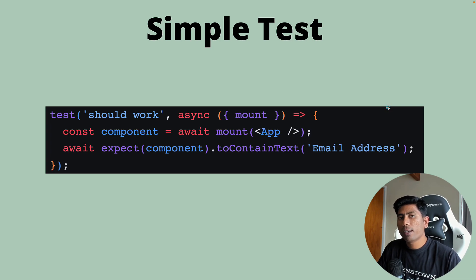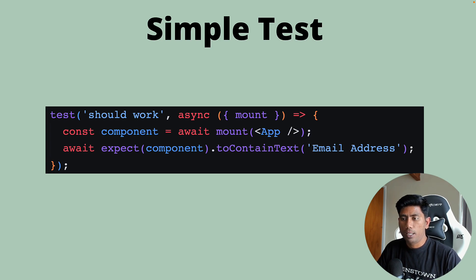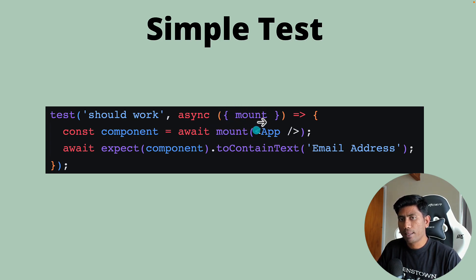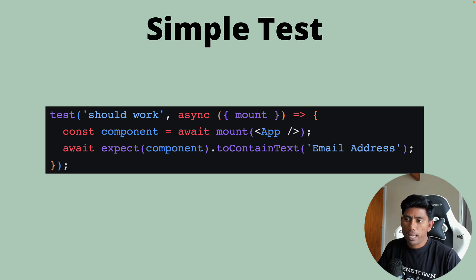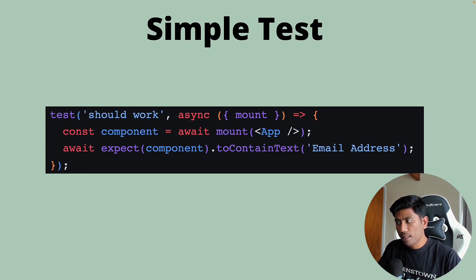Once you have that, you can start writing a simple test. The test looks pretty much exactly like a regular Playwright test, but the key difference is there's a mount parameter. This mount is coming from the experimental package, and it is used to mount your application or any component available within your application — a login component, settings component, or profile component.